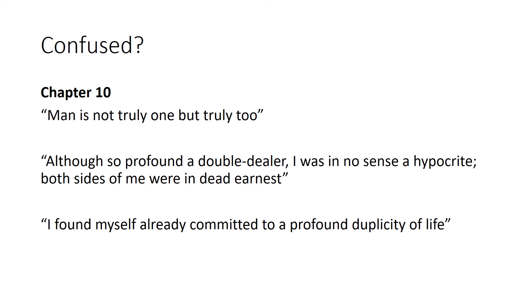In chapter 10, Jekyll seems to have come to terms with who he truly was. He says, Man is not truly one, but truly two. The repetition of truly renders this a statement of fact — he's absolutely certain, as is Stevenson, about the inherent duality of mankind. He says, Although so profound a double dealer, I was in no sense a hypocrite. Both sides of me were in dead earnest. So Jekyll acknowledges both sides of himself, and in labelling himself as not a hypocrite, there is a subtle criticism that the rest of society is being hypocritical.